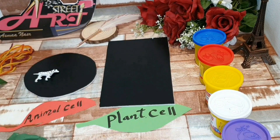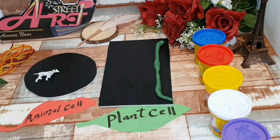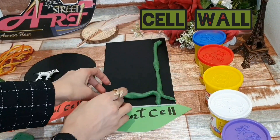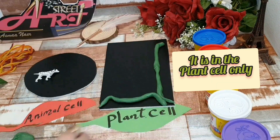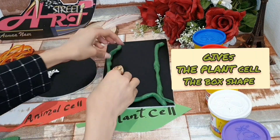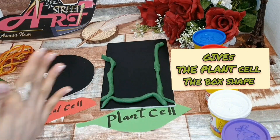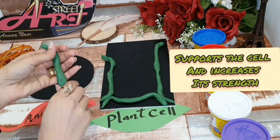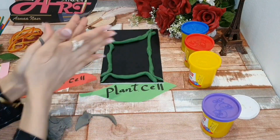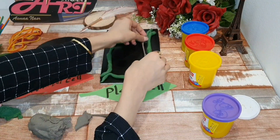Now I will start to make the cell wall. The cell wall is a stiff structure found only in the plant cell. It gives the plant cell its box shape. Its function is to protect the cell and give it strength.